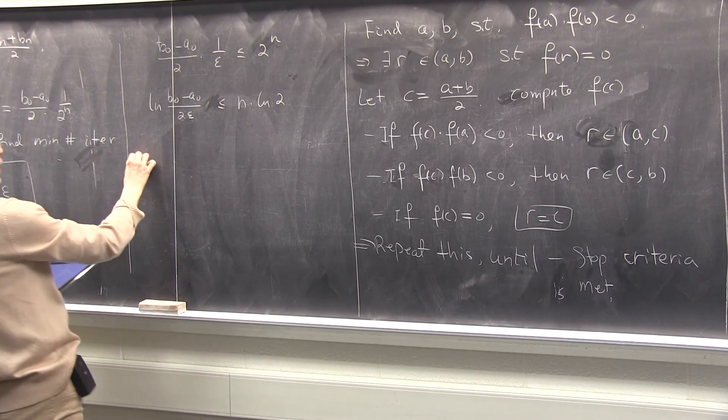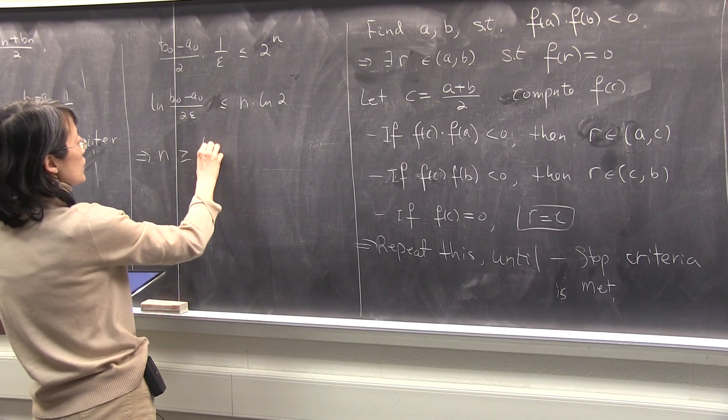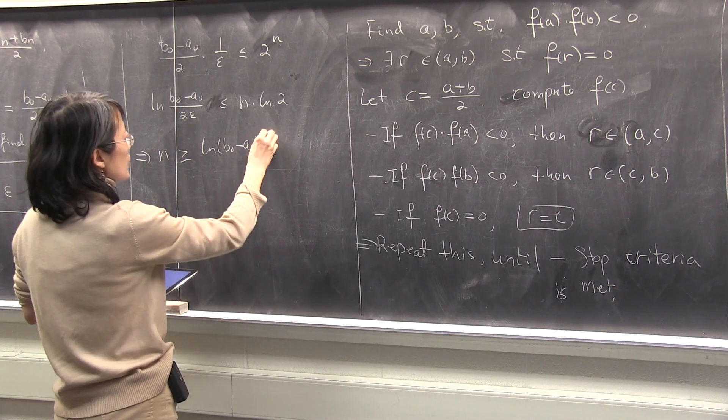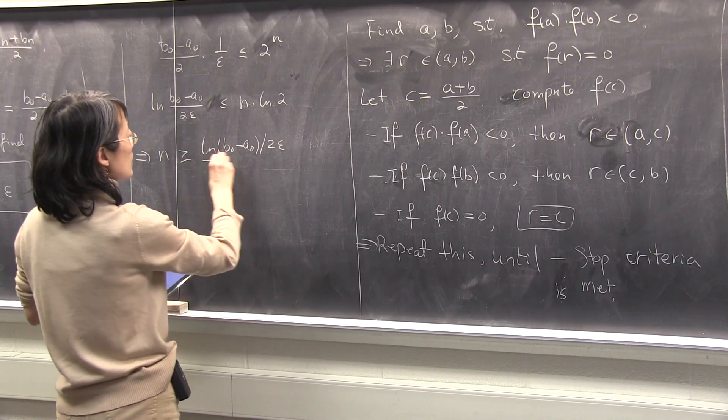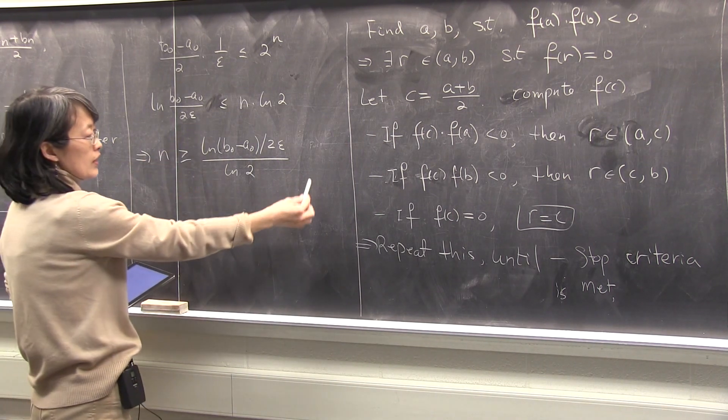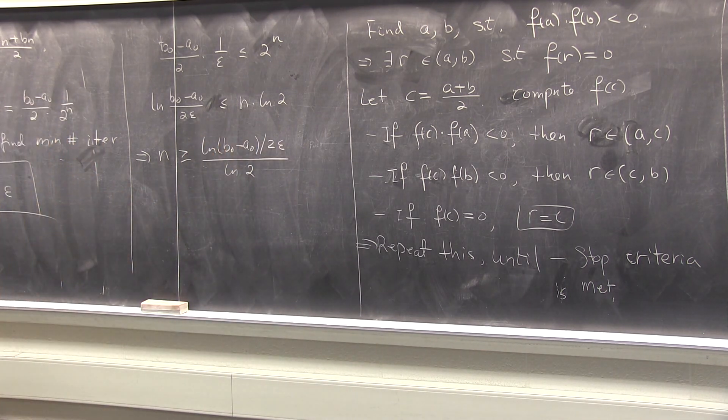So you can rewrite it now. n will be bigger than, move ln 2 over down here. So ln of b zero minus a zero over 2 epsilon over ln of 2. It's something you can easily compute. So you would take the smallest natural counting number that's bigger than this value to guarantee the accuracy is met. Is that okay? Any questions?